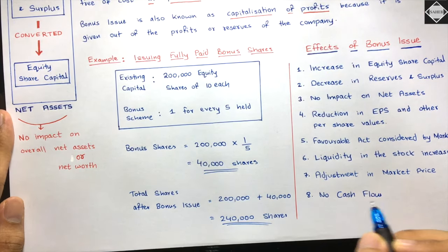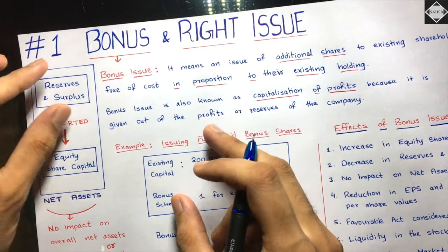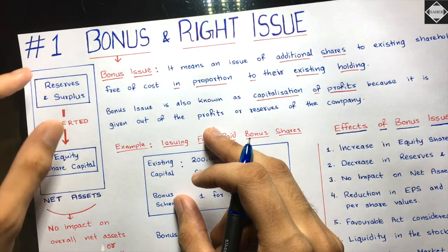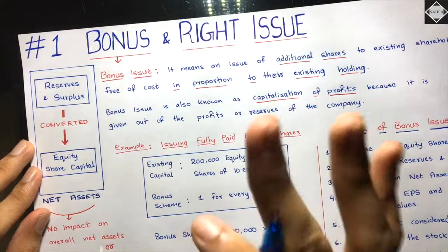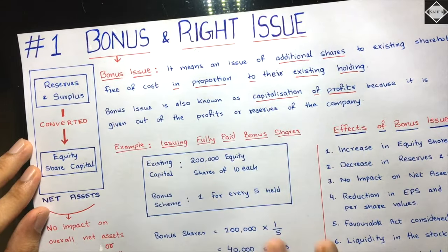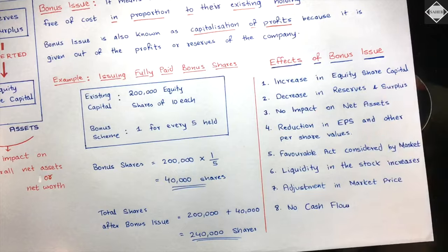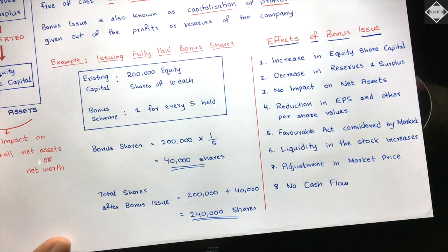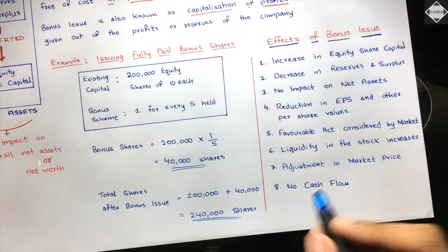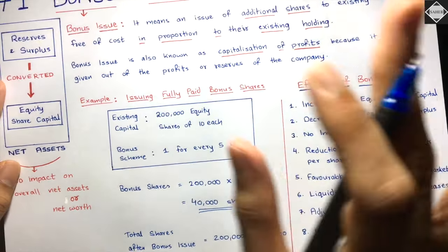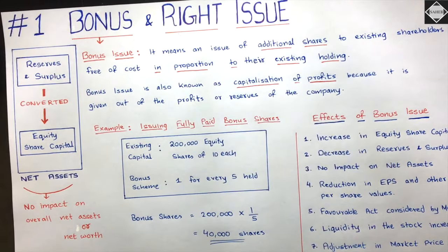The eighth effect: there will be no cash flow because of bonus issue. No cash will move. It's just internal funds - reserves and surplus have been used and converted into equity share capital. Also note that bonus issue is about equity share capital only; there is no preference capital connected with bonus issue.